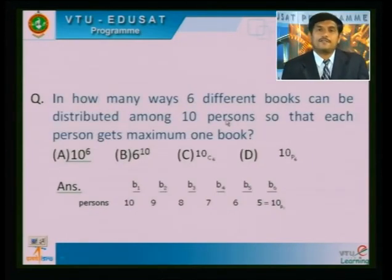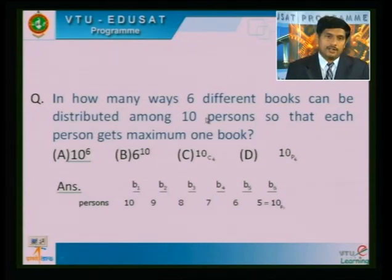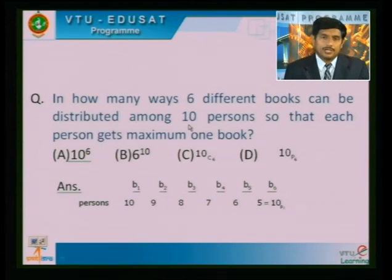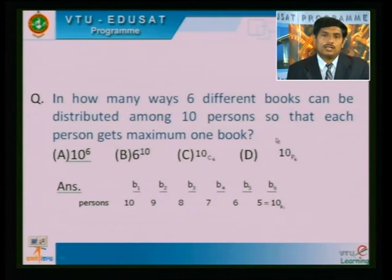In how many ways can six different books be distributed among 10 persons so that each person gets at most one book? Here we are selecting and arranging 6 books among 10 persons: the first person can be any of 10, the second any of 9, and so on. This is a permutation: ¹⁰P₆. Therefore the fourth option is the solution.